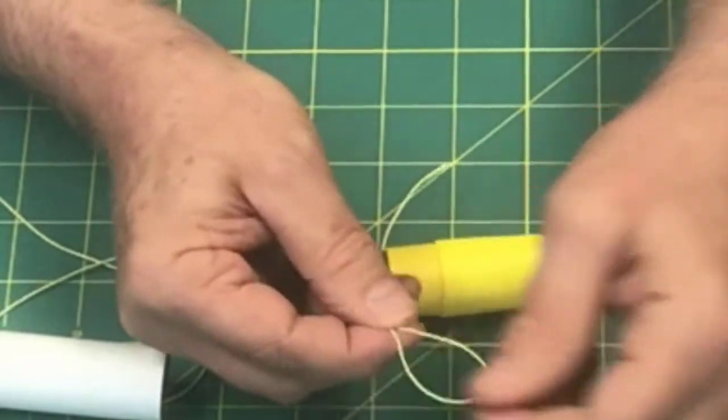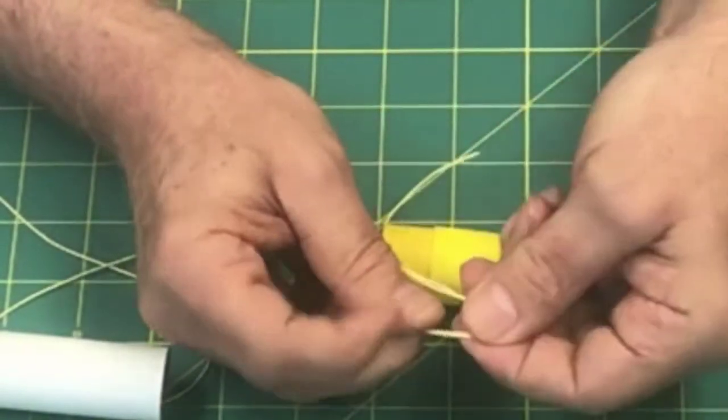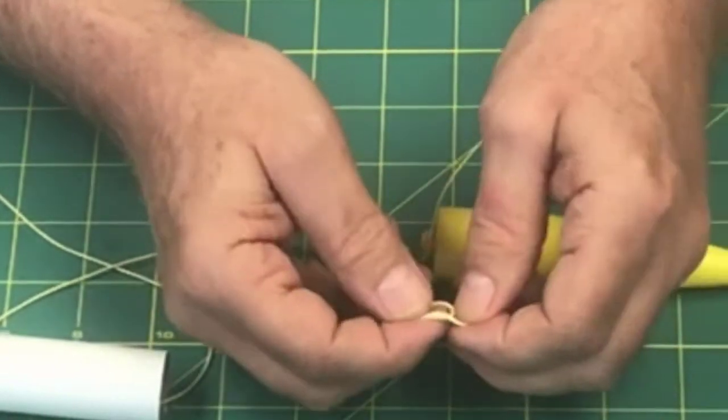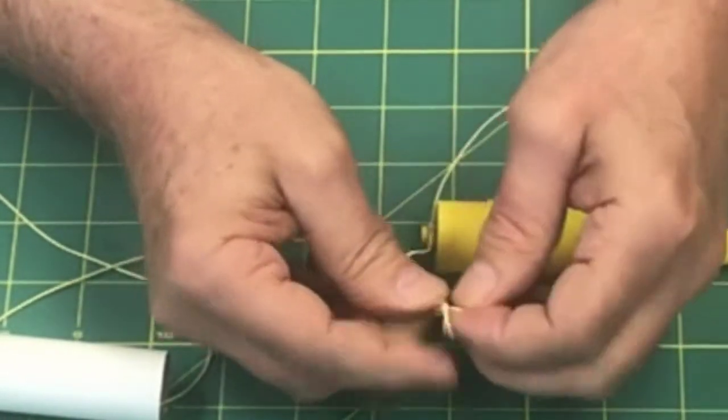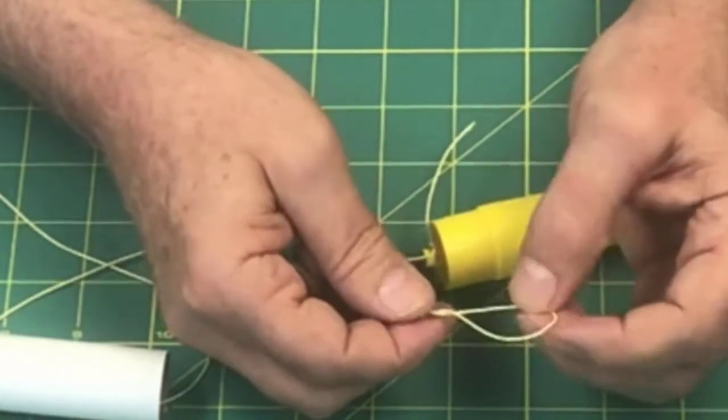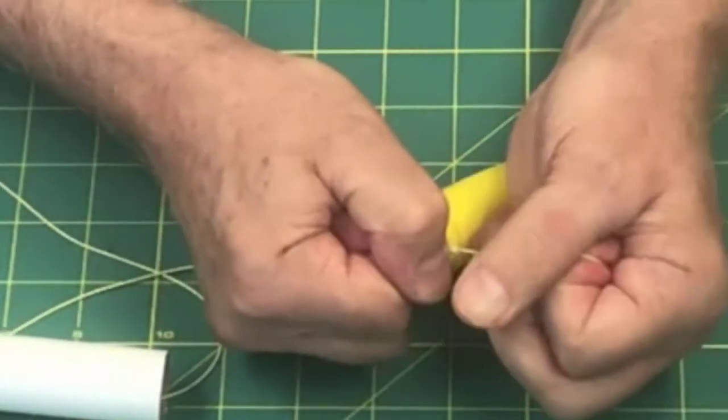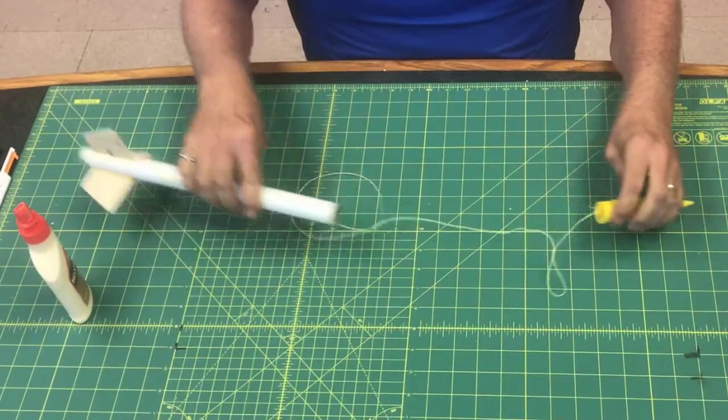Come around the top, come underneath, and make a loop. Make sure that loop is about that big. It needs to be fairly big because we're going to attach a bunch of different things to it. Just pull that tight, and now you have your shock cord.